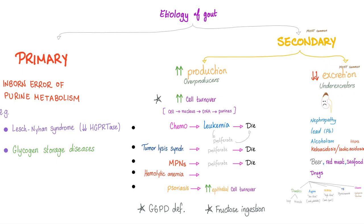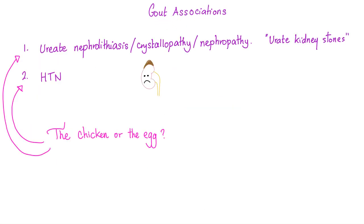How can you tell the difference? Just order urine uric acid. Don't forget that gout can be associated with uric acid kidney stones and hypertension. Here's a chicken-or-the-egg story: hypertension can damage your kidney, and a damaged kidney can lead to hypertension. Same with uric acid — uric acid can damage your kidney, or a bad kidney can lead to high uric acid in the blood. It's very difficult to tell which came first.